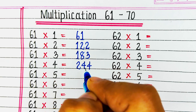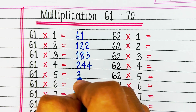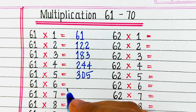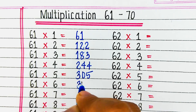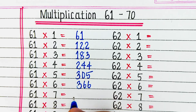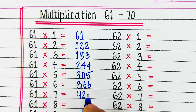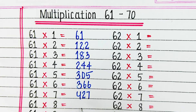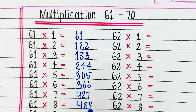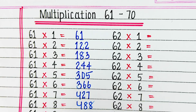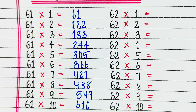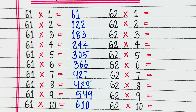First is table of 61. 61 1s are 61, 61 2s are 122, 61 3s are 183, 61 4s are 244, 61 5s are 305, 61 6s are 366, 61 7s are 427, 61 8s are 488, 61 9s are 549, 61 10s are 610.